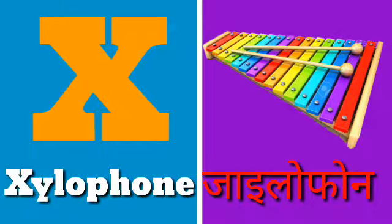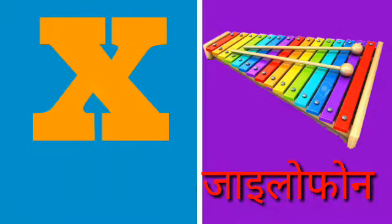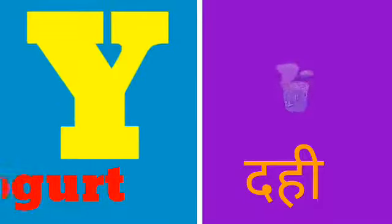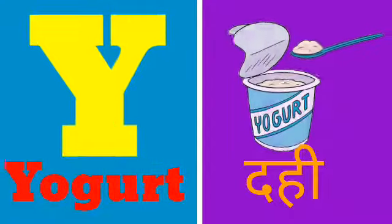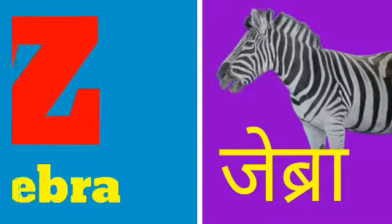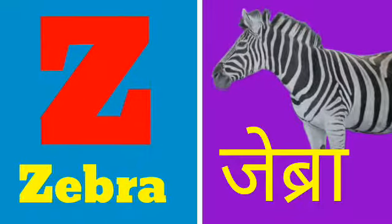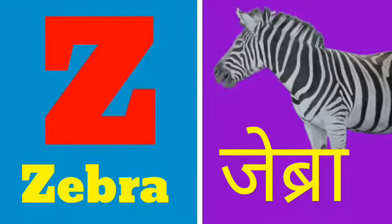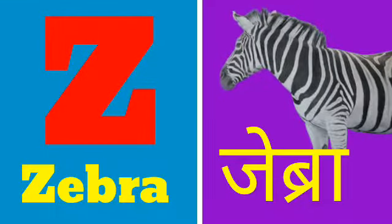X for xylophone, xylophone means xylophone. Y for yogurt, yogurt means dahi. Z for zebra, zebra means zebra. Here we go!